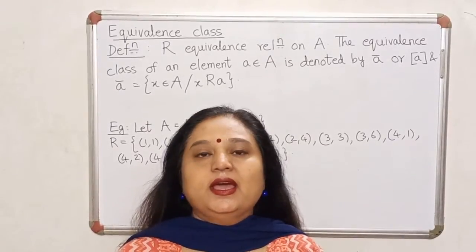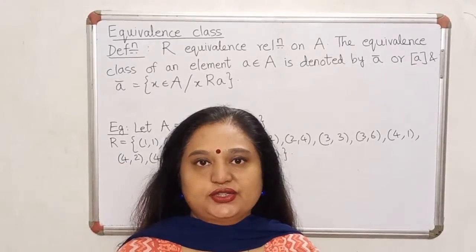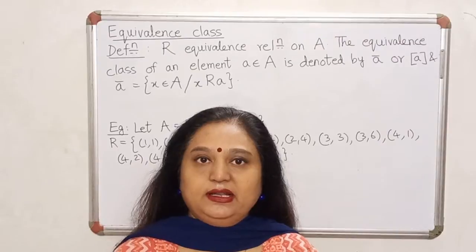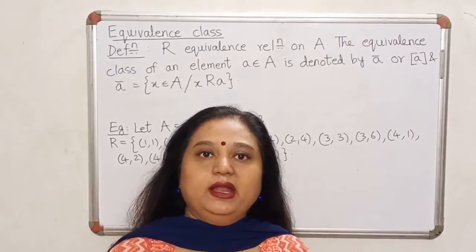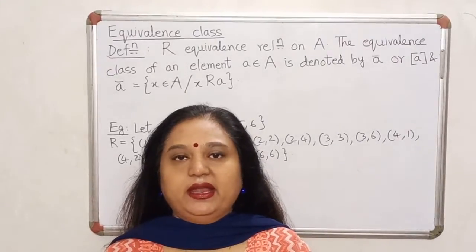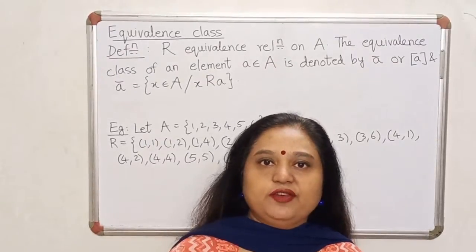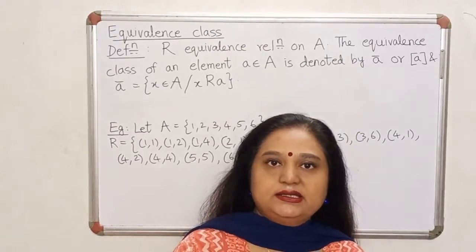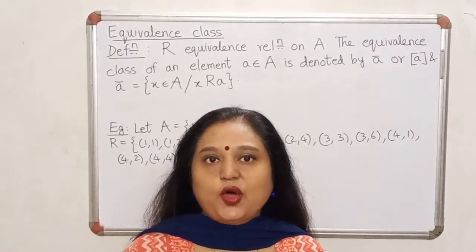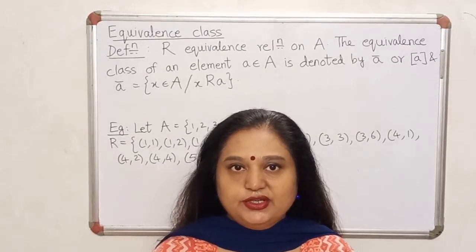Good morning dear students. In the last lecture we studied various types of relations on a set — specifically a reflexive relation, a symmetric relation, and a transitive relation. Recall that a reflexive relation on a set A is one where every element of A is related to itself. A symmetric relation means whenever an element is related to another, the second is also related to the first. A transitive relation means whenever a first element is related to a second and the second to a third, the first must be related to the third. Any relation satisfying all three properties is called an equivalence relation.